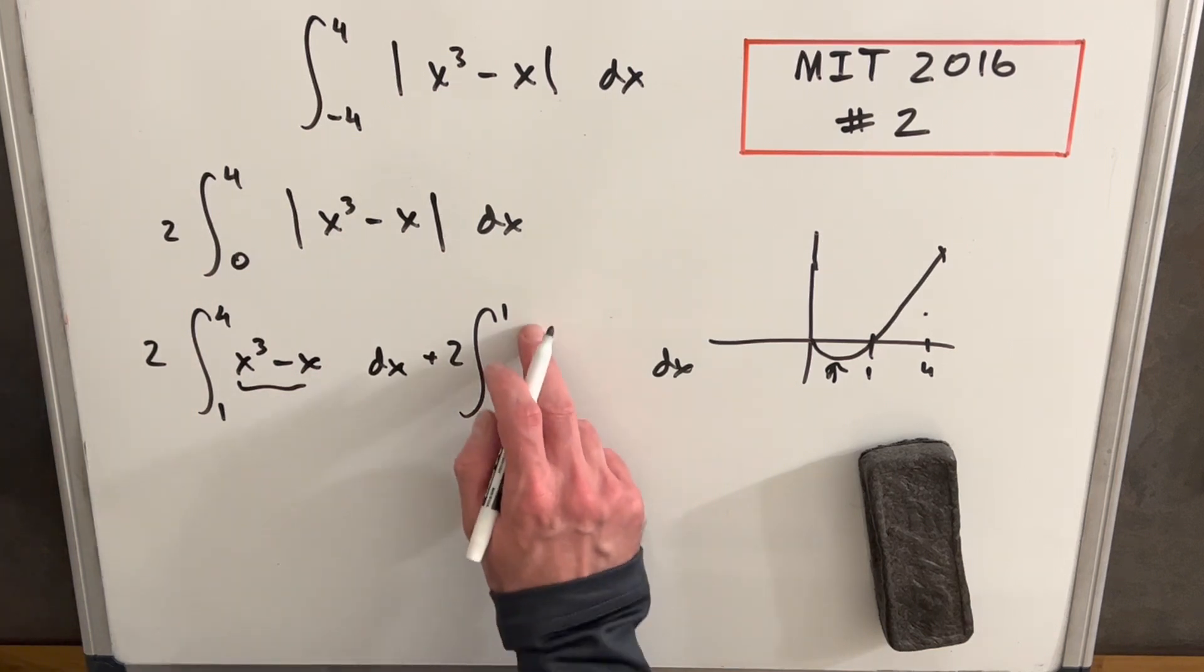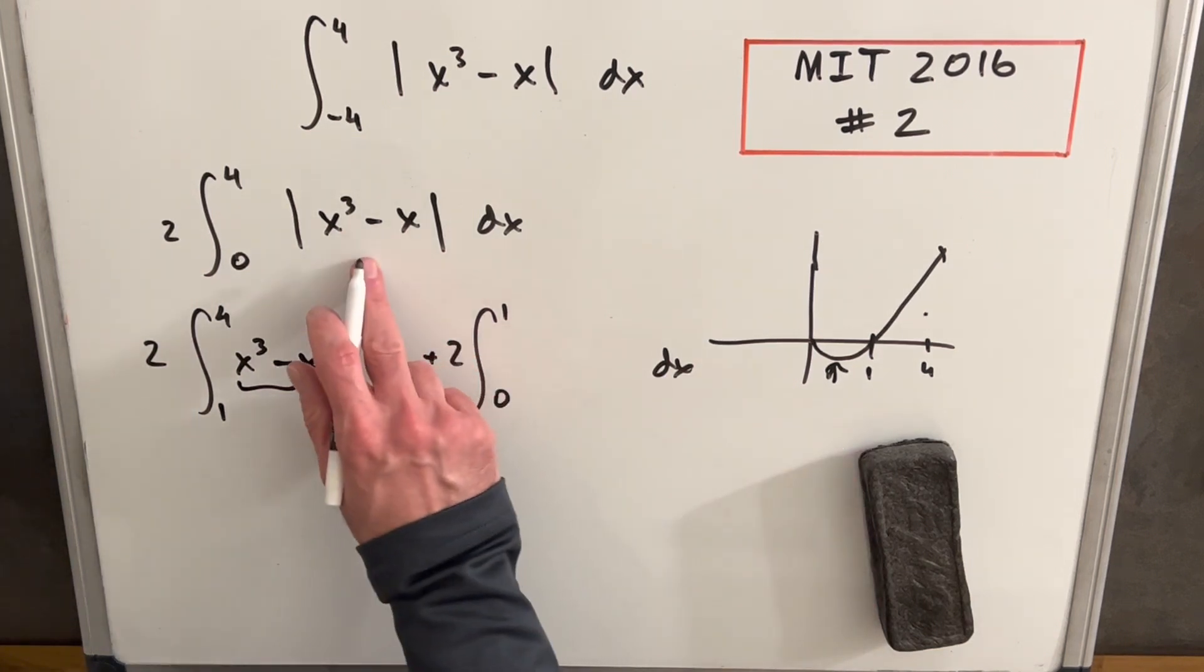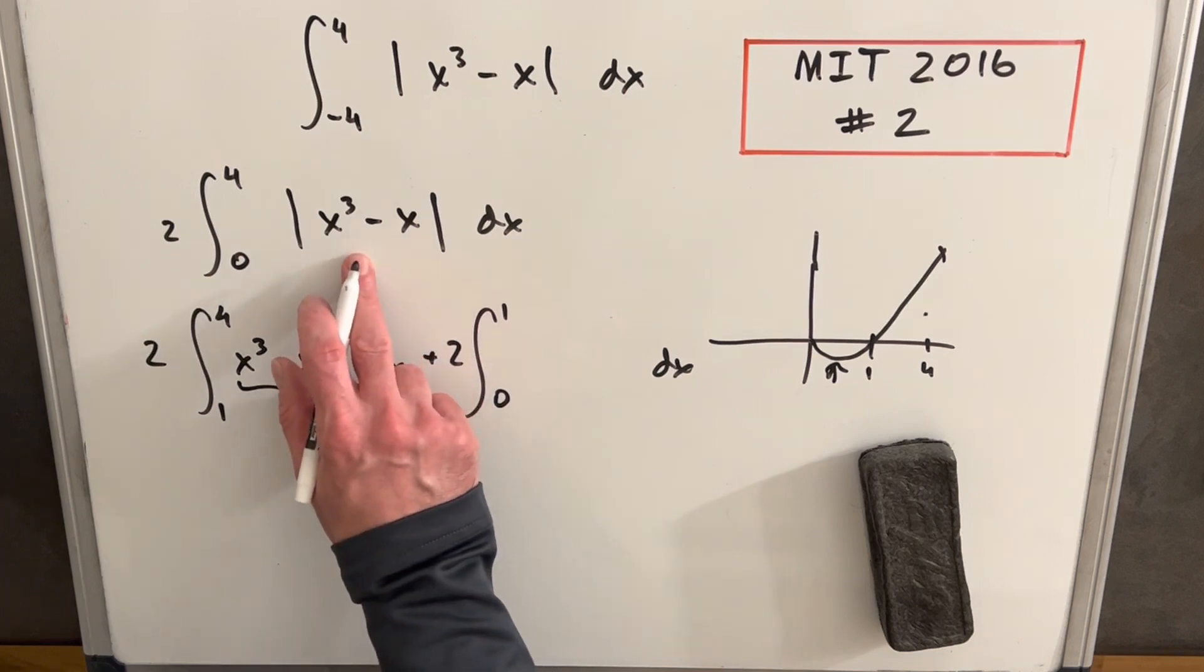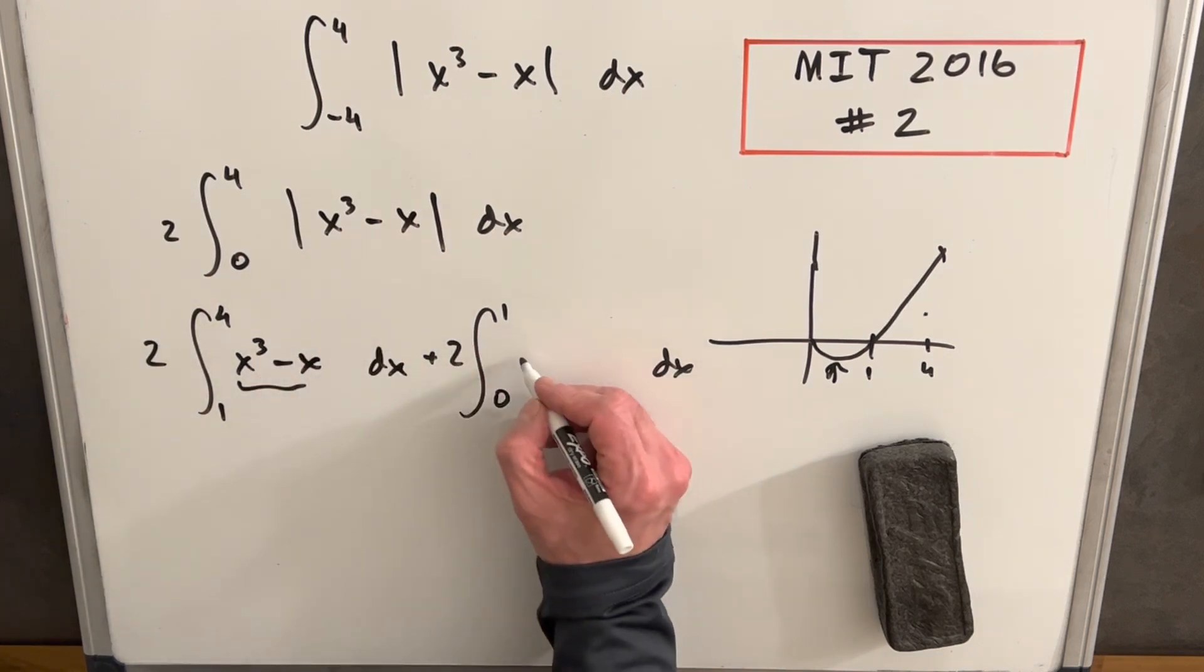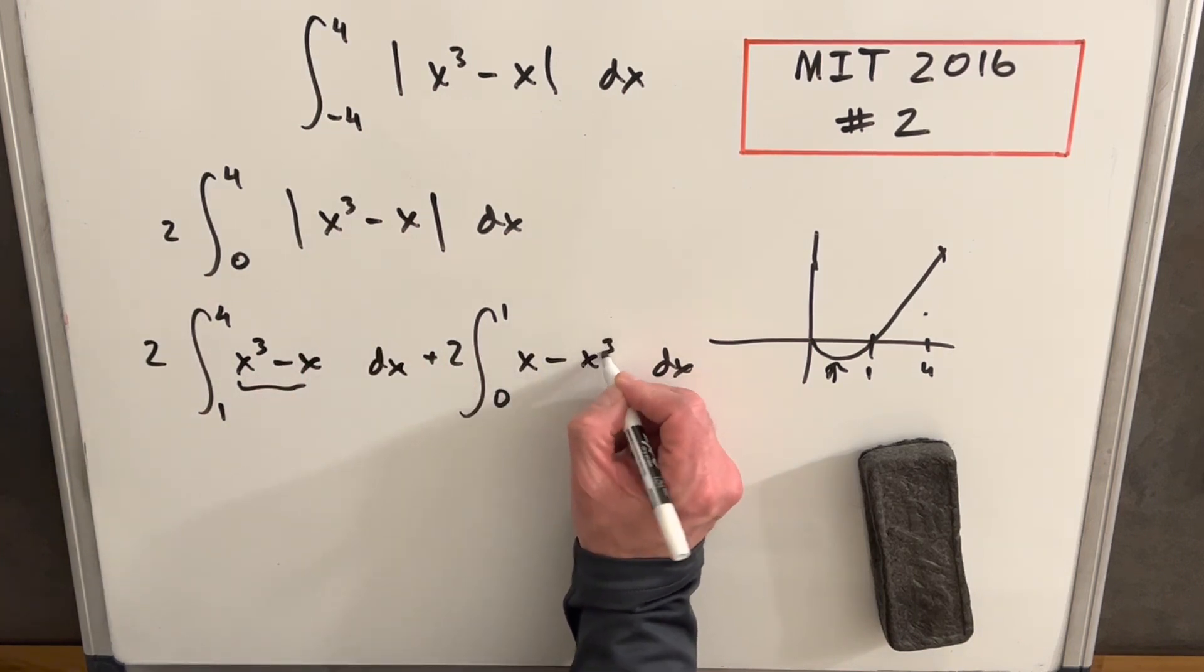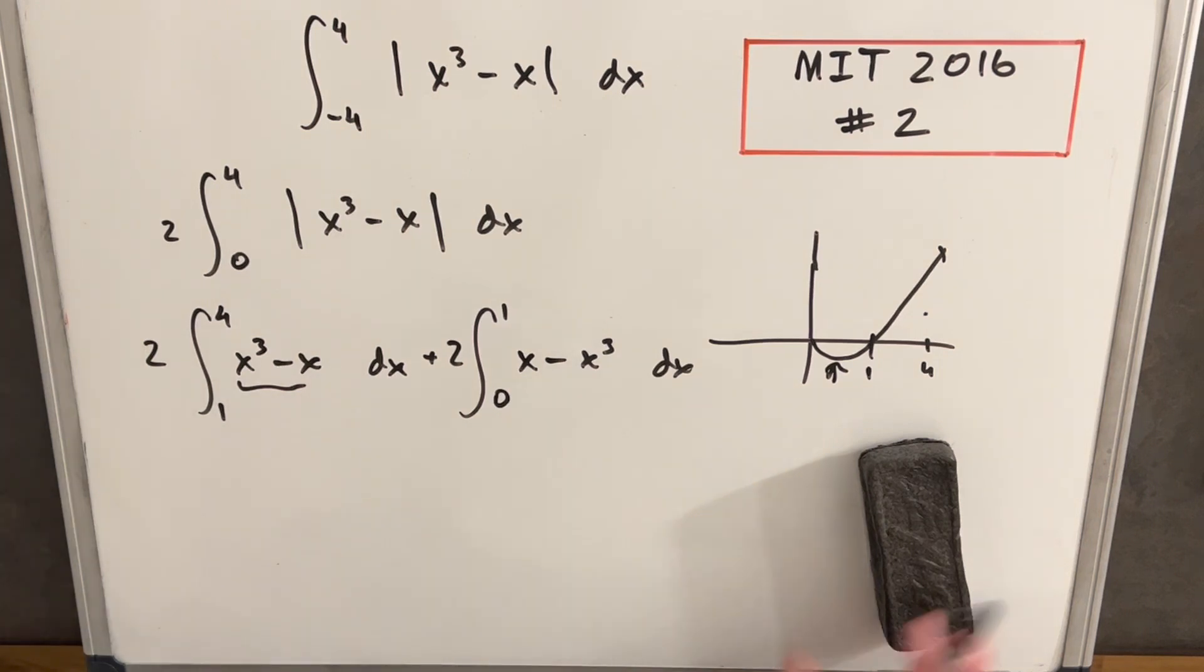And then between zero and one, we know we're always negative, so we can actually just reverse the sign and drop the absolute value. So we can write this as x minus x cubed. And from here, all we need to do is integrate and evaluate this thing.